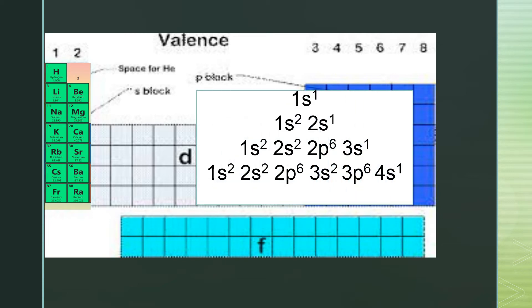Let's understand with the help of a few examples. I have taken the examples of hydrogen, lithium, sodium, and potassium. You can see clearly that the last electron is coming in the S subshell: 1s¹ for hydrogen, 1s² 2s¹ for lithium, 3s¹ for sodium, and 4s¹ for potassium. That's why they are known as S block elements.